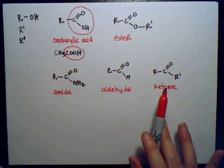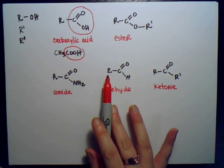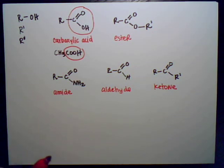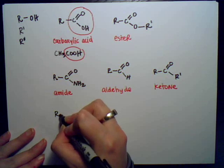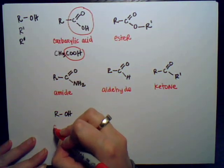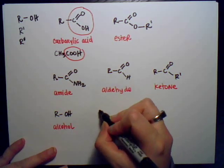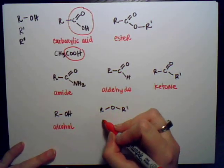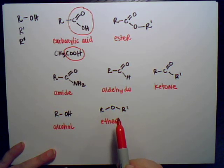These two are really similar, but the difference is that aldehyde has the C double bond O connected to an R group and a hydrogen, whereas ketone is connected to an R group and a different R group. And of course, don't forget alcohol, which is just OH. It would have the oxygen in between two different R groups.